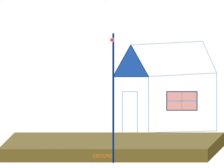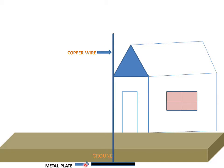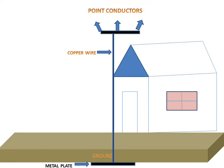We have to put a copper wire in the ground. This is a copper wire, and a buried metal plate which is connected with the copper wire. The upper portion of the copper wire is connected to the point conductors. These are the point conductors.